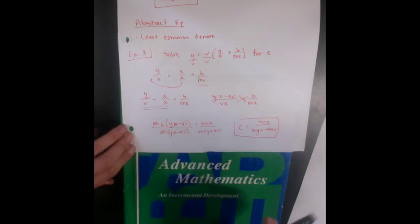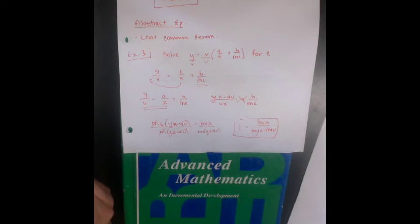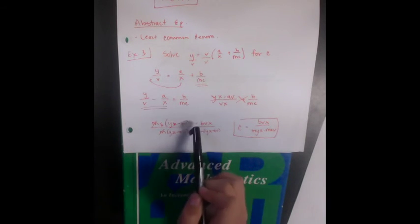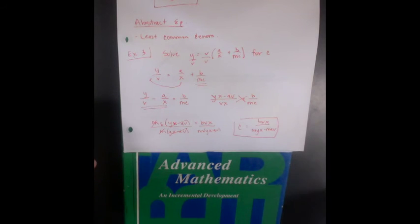And I'm going to cross multiply here. This is my cross multiplication. I get mc times yx minus av, and it equals bx.